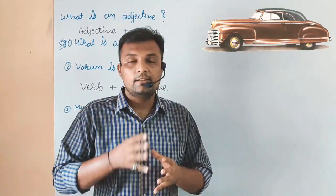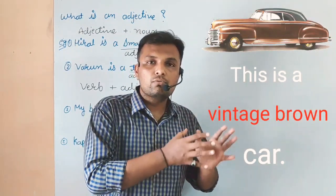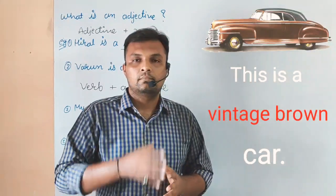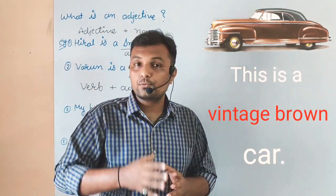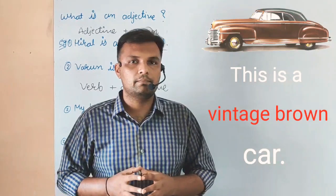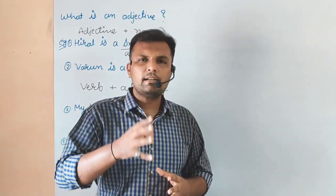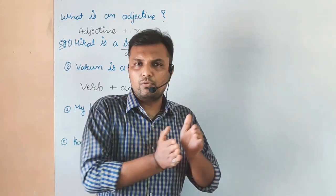This is a vintage brown car. Vintage and brown - so we have two adjectives used in one sentence. So there are eight adjectives. And what are we going to follow in the adjective order?